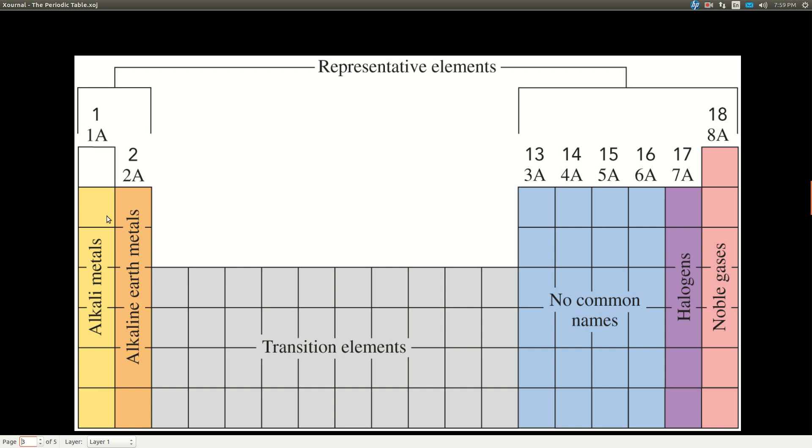Now we can also break this up, or talk about the elements as the representative elements versus the transition elements. The representative elements are just the columns that are the outsides. The first two, the alkali metals and the alkaline earth metals, and then the ones over here, 3A through 8A, or 13 through 18. So you need to be able to classify an element as to where it belongs in the periodic table. An alkali metal, a transition element, noble gas, representative or transition.